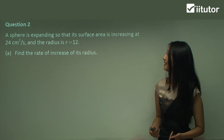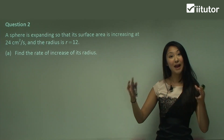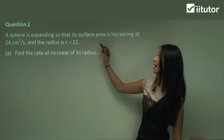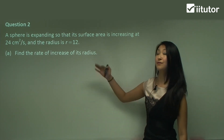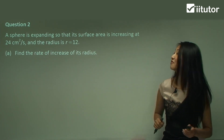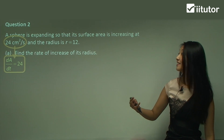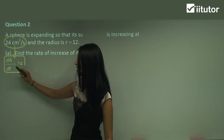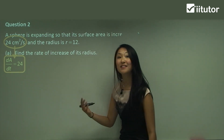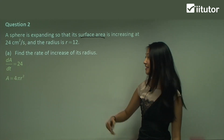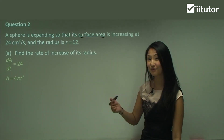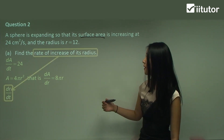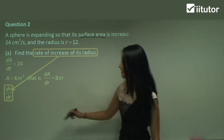Here we have a sphere again, and we're told it's expanding so its surface area is increasing at 24 centimetres squared per second, and the radius is r equals 12. We want to find the rate of increase for the radius. Write out all that information: we know dA on dt equals 24. Since we're working with surface area, write out the equation and differentiate it again. So dA on dr is 8πr. Now we want to find the rate of increase for the radius, which is dr on dt.